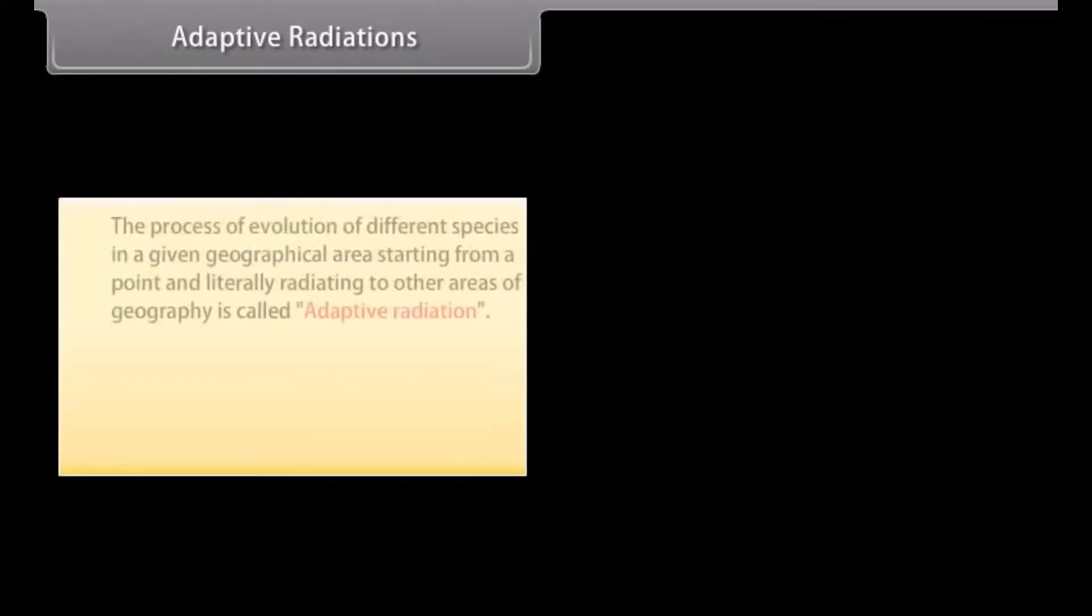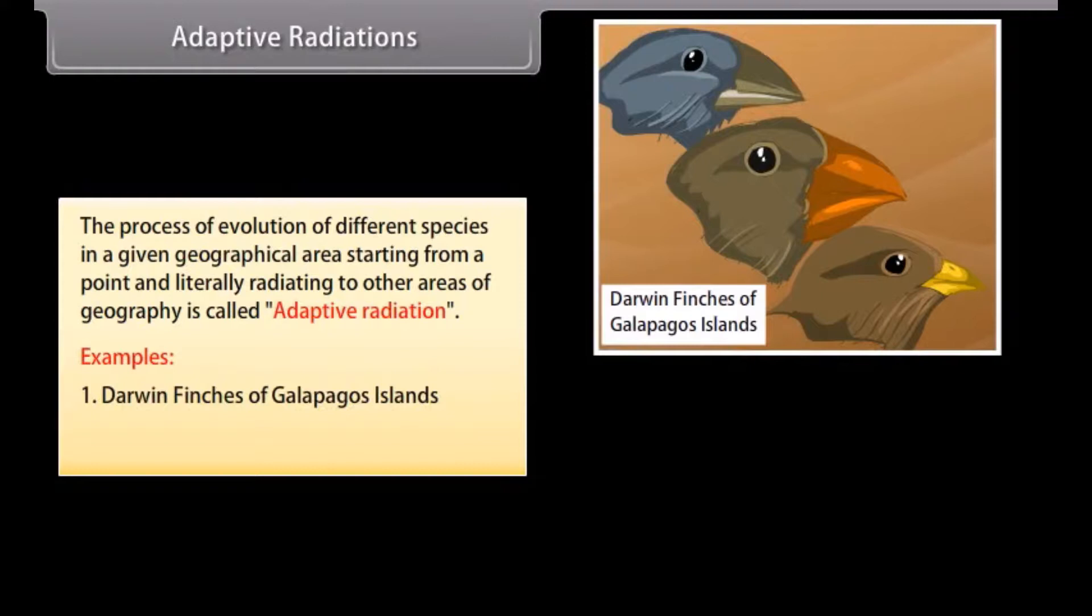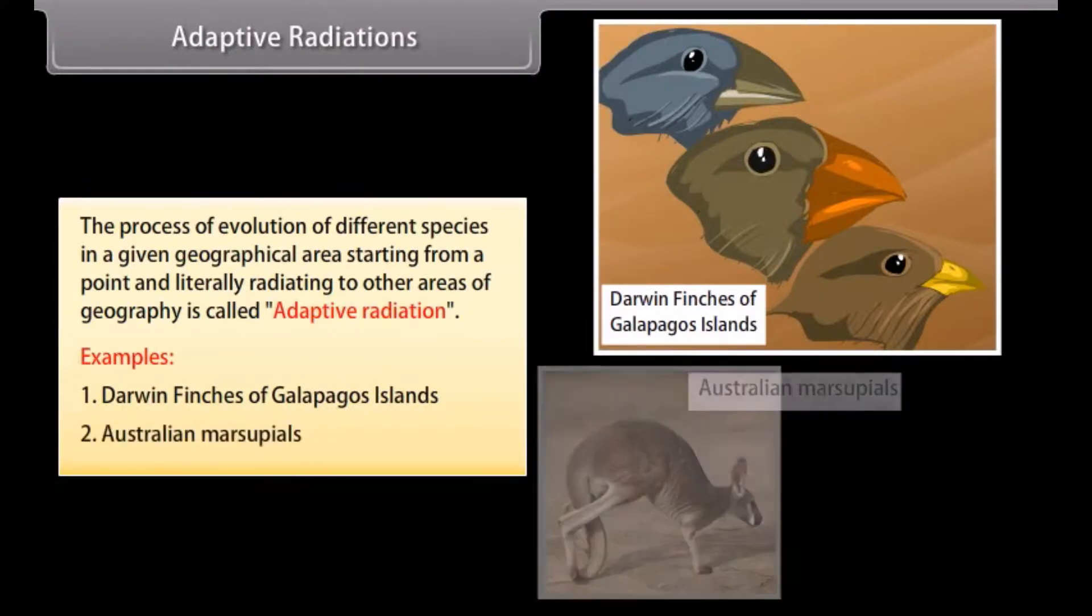Adaptive radiations. The process of evolution of different species in a given geographical area, starting from a point and literally radiating to other areas of geography, is called adaptive radiation. Examples: Darwin finches of Galapagos Islands, Australian marsupials.